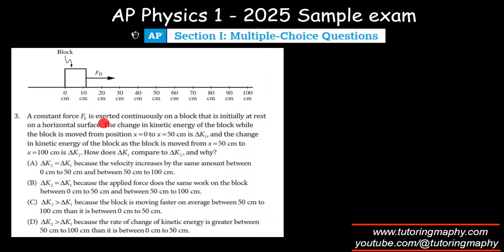Given that there is a constant force that is exerted continuously on a block that is initially at rest on a horizontal surface, the change in kinetic energy of the block while the block is moved from 0 to 50 centimeters is ΔK1, and the change in kinetic energy of the block is moved from 50 to 100 is ΔK2. So compare ΔK1 and ΔK2.